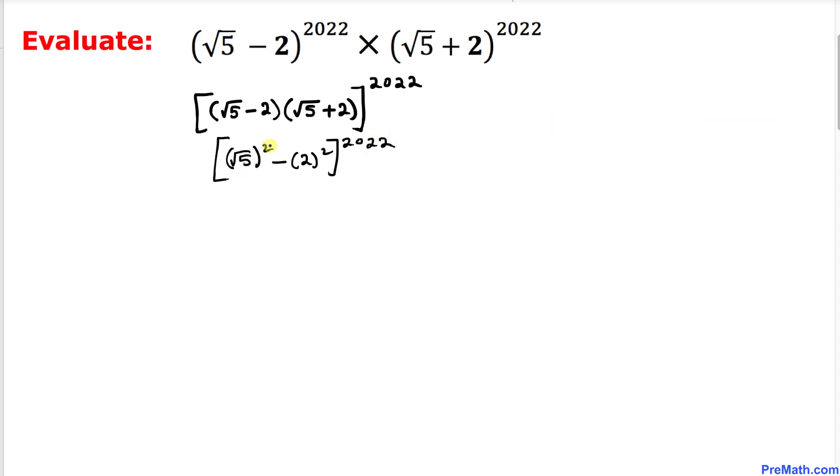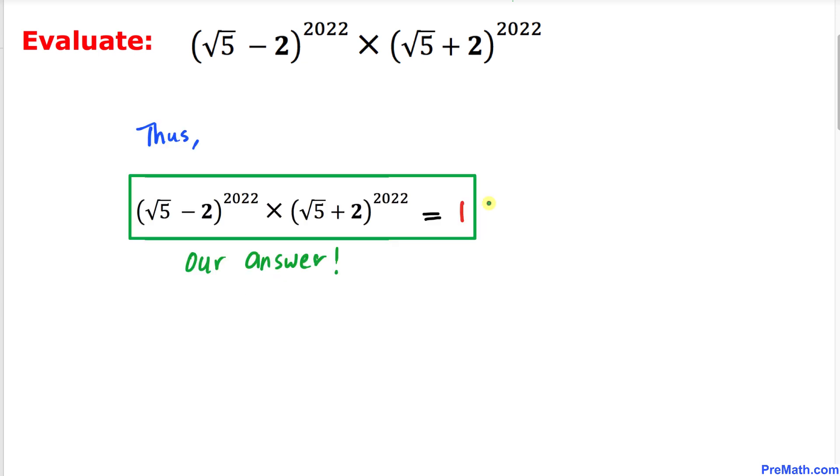We can see that the square and square root are inverse to each other. So we get 5 minus 2 squared is 4, to the power 2022. And 5 minus 4 is 1 to the power 2022. We know that 1 to any power is 1 itself. Thus our simplified answer is 1.